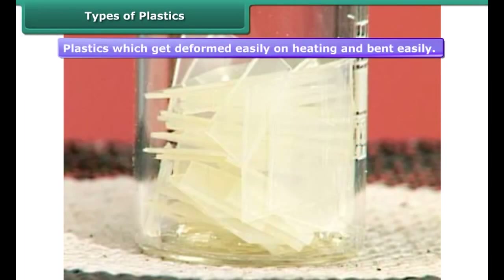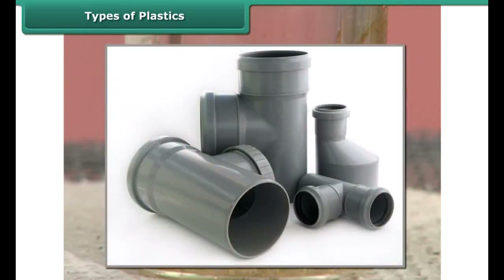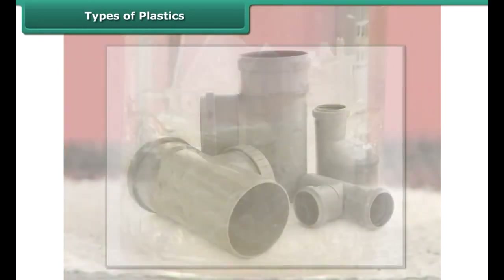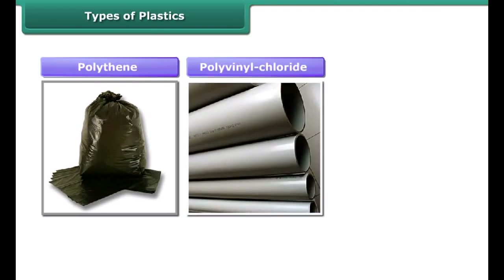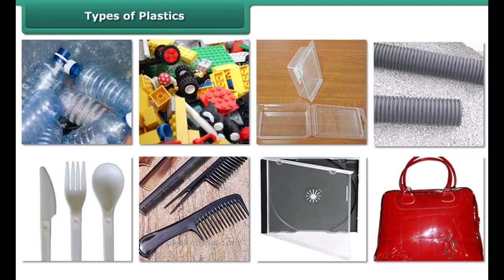There are two types of plastics based on their reaction upon being heated: thermoplastics and thermosetting plastics. The constituent units of thermoplastics have a linear arrangement. On being heated, thermoplastics become moldable and soft. They can be recast in different shapes and then cooled, causing them to harden without any chemical change. Therefore, they can be recycled.